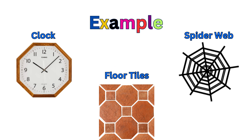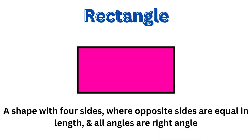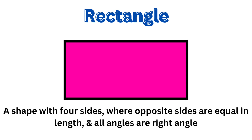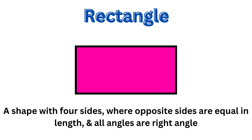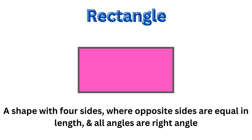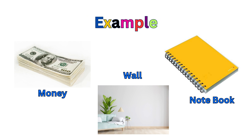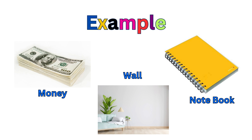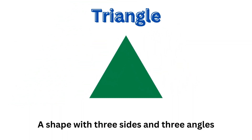Next, rectangle. A rectangle is a shape with 4 sides where opposite sides are equal in length and all angles are right angles. Examples are money, a wall, and a notebook.